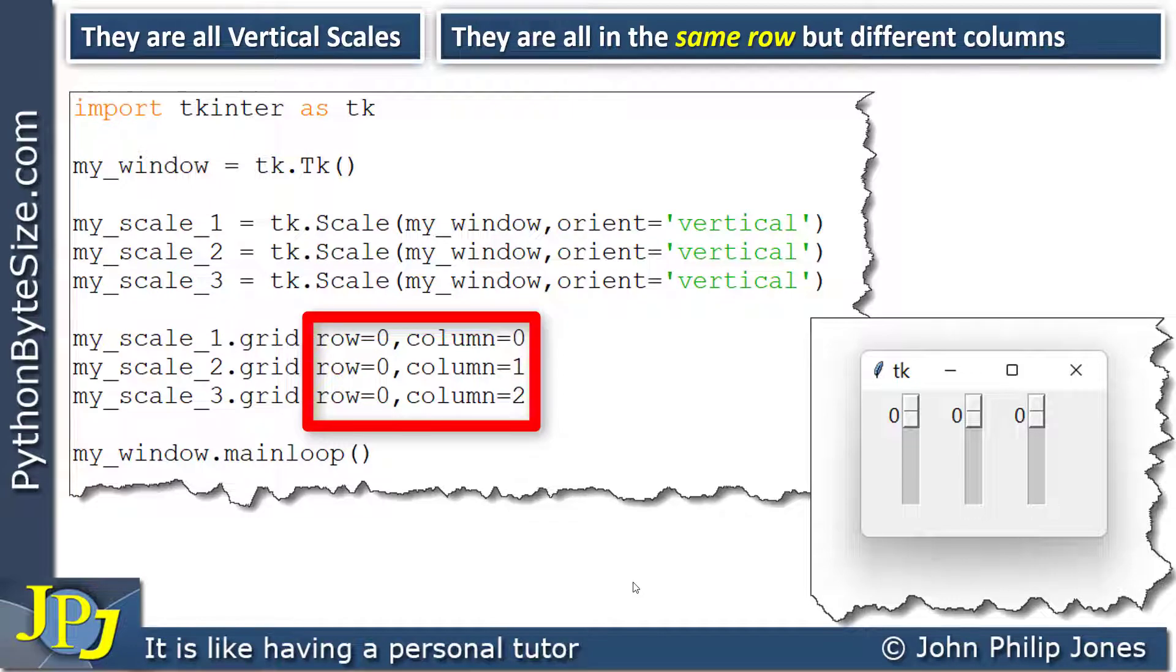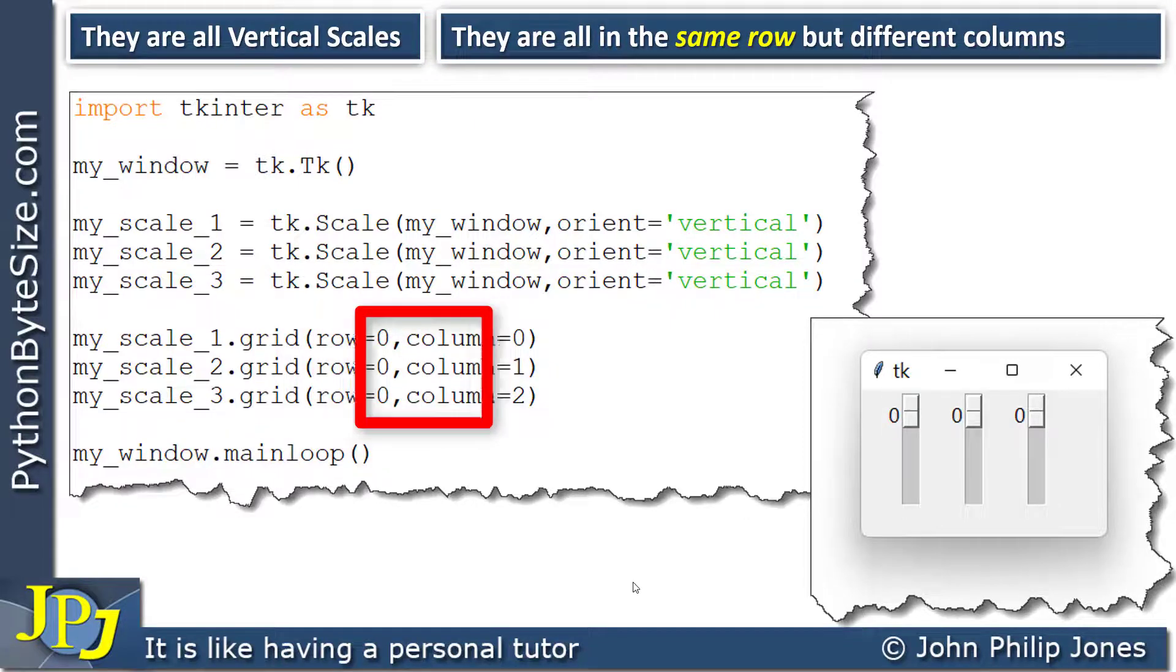Now the first thing I would like you to note is that the row for all three has been set to zero and that's because we know they're in the same row.